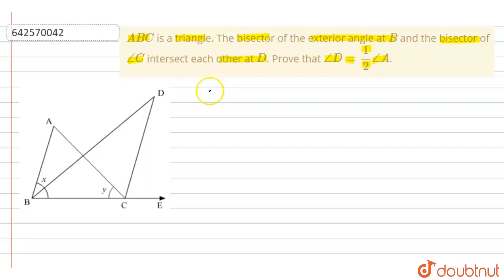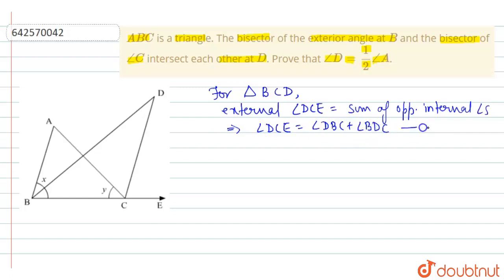So from this diagram for triangle BCD, external angle DCE is equal to sum of opposite internal angles, which implies angle DCE is equal to angle DBC plus angle BDC. Let us call it equation number 1.